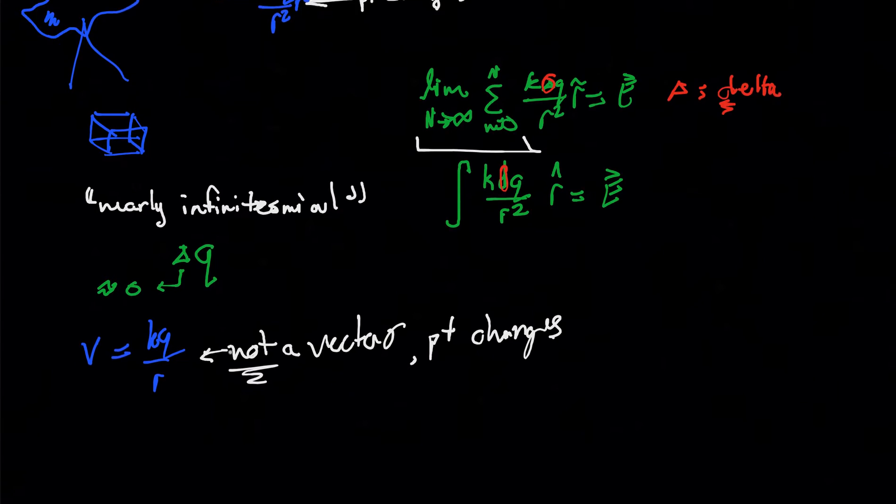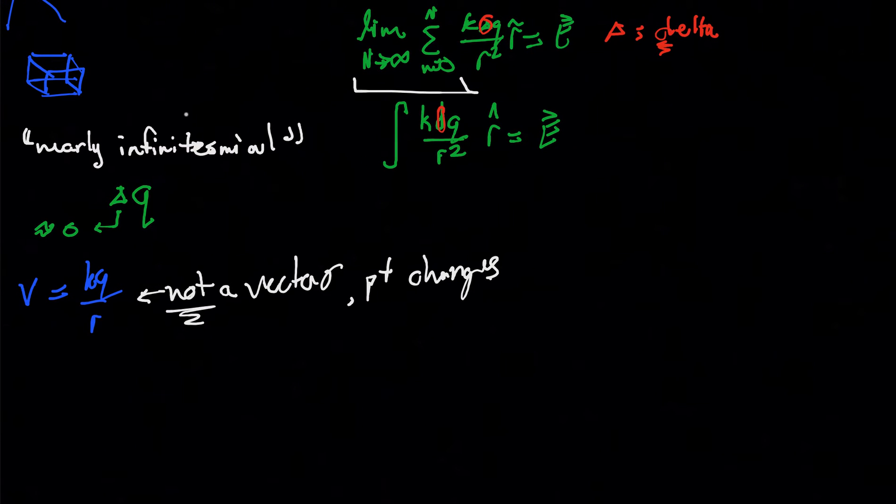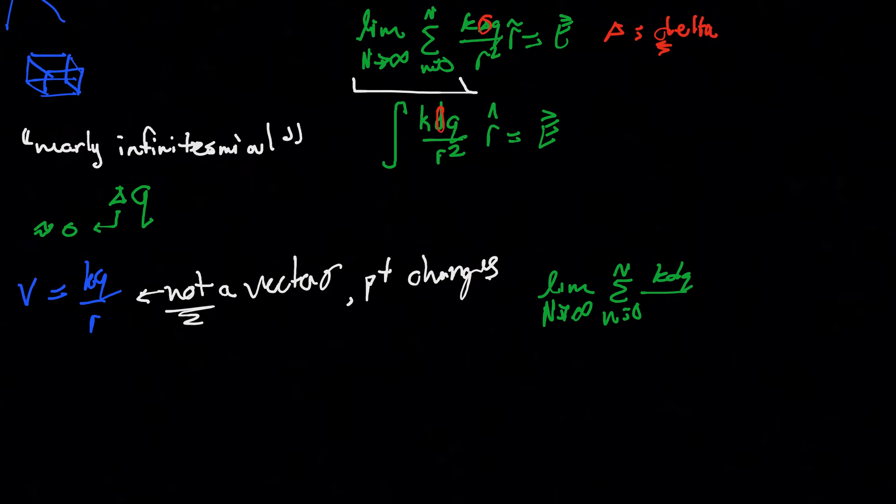And so with that in mind, we can still write that V in the exact same way as we did for these guys. So we can just write the limit as n goes to infinity for sum of n, n equals zero, k delta q over r will give me V. And then similarly, I can write the integral k dq over r gives me V.